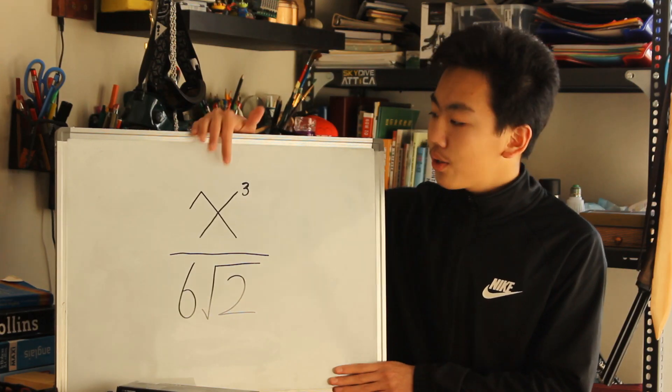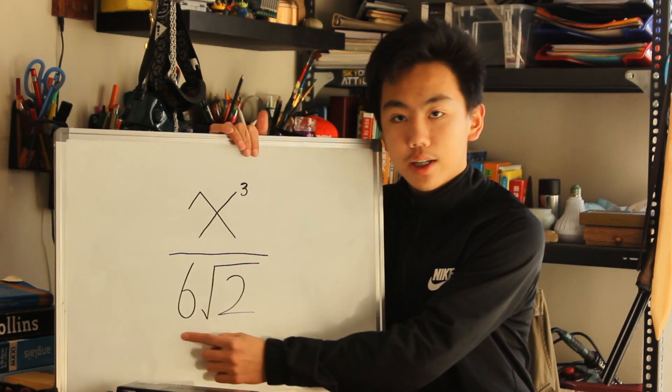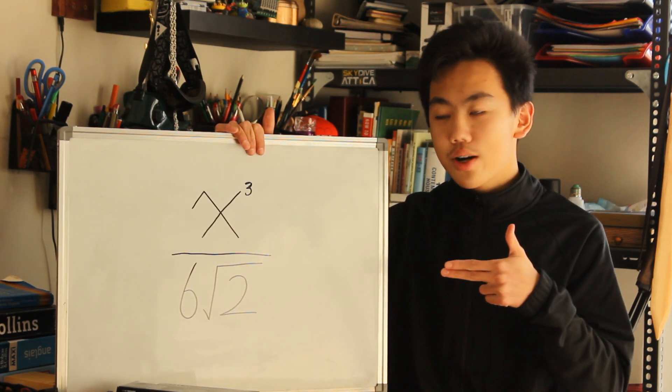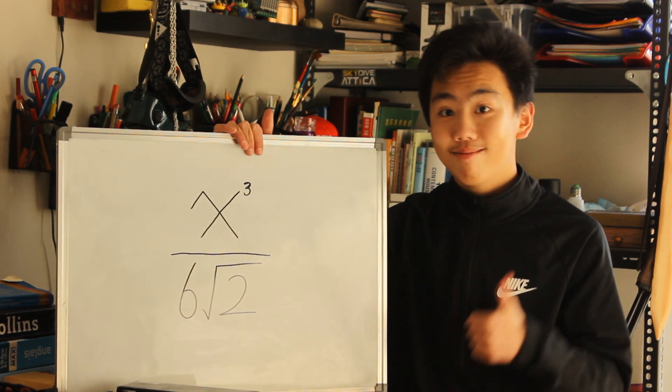As a result, we've got x to the power of 3 over 6 times square root of 2. If you like this video, give me a like and check out this video on the surface area of polyhedrons as well. See you next time!